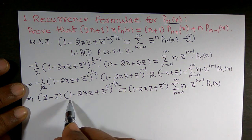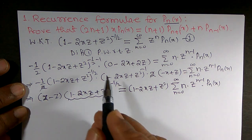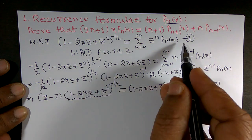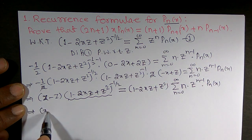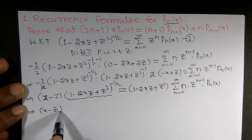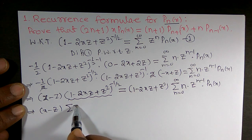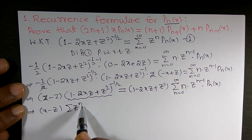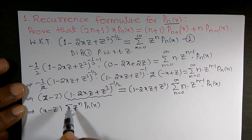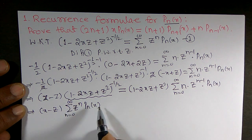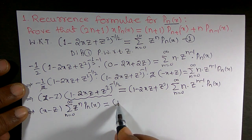Now this can be replaced using equation 1. So this implies (x - z) times the summation of z^n · Pn(x) for n from 0 to infinity equals (1 - 2xz + z²) times the summation of n · z^(n-1) · Pn(x) for n from 0 to infinity.